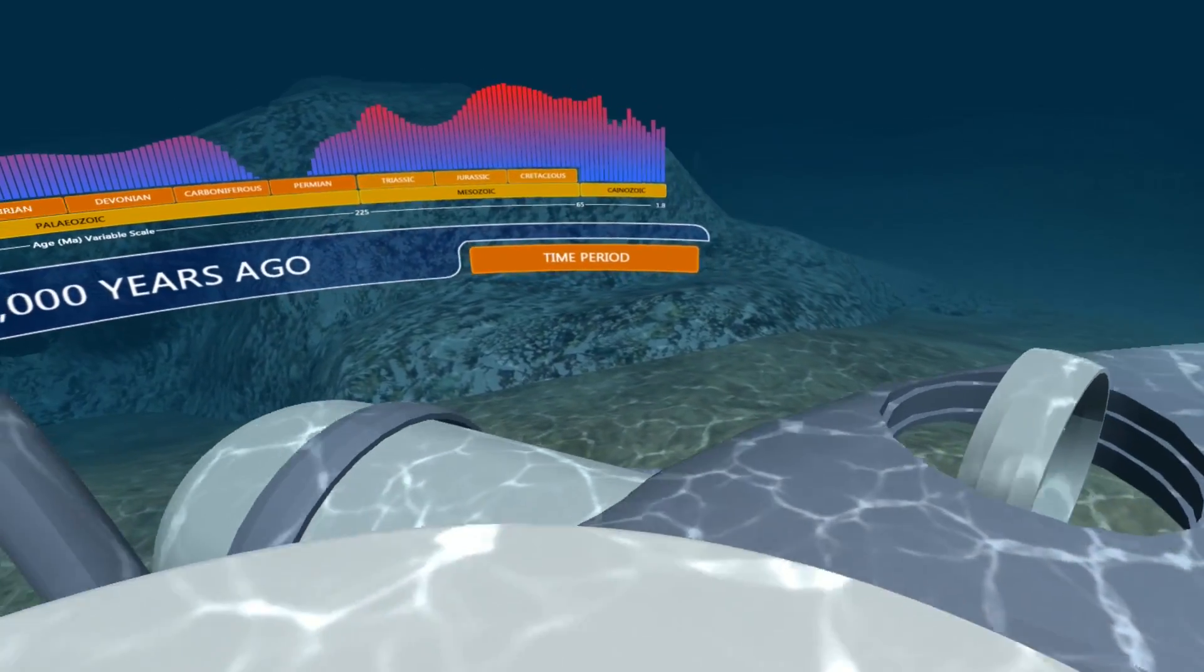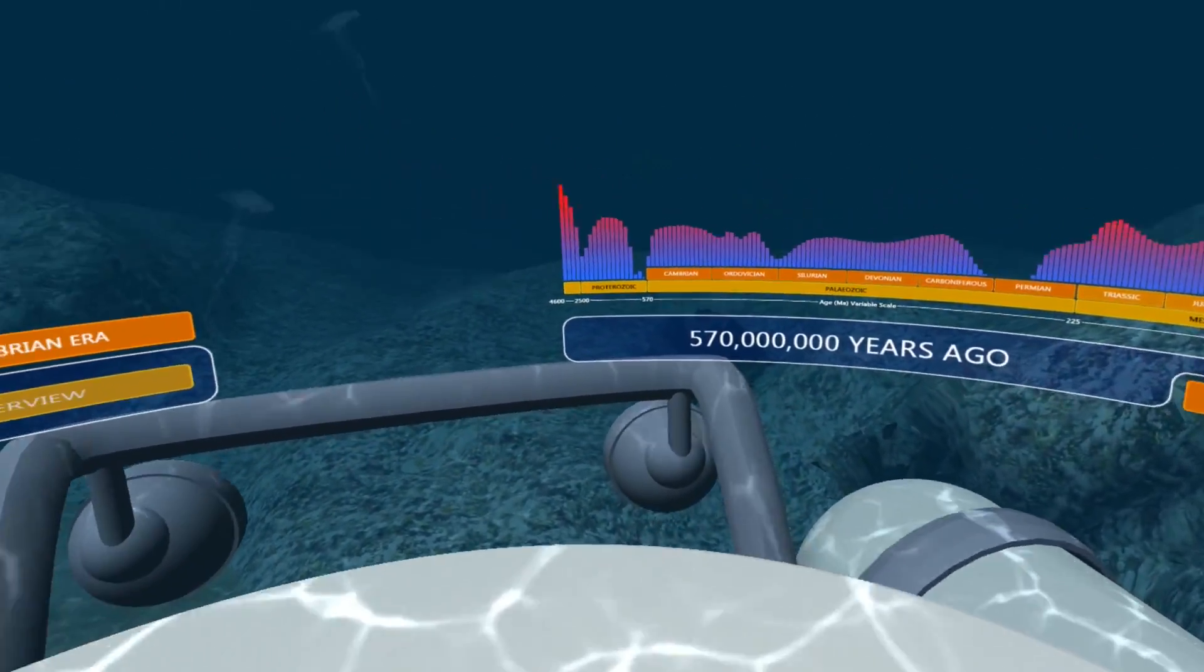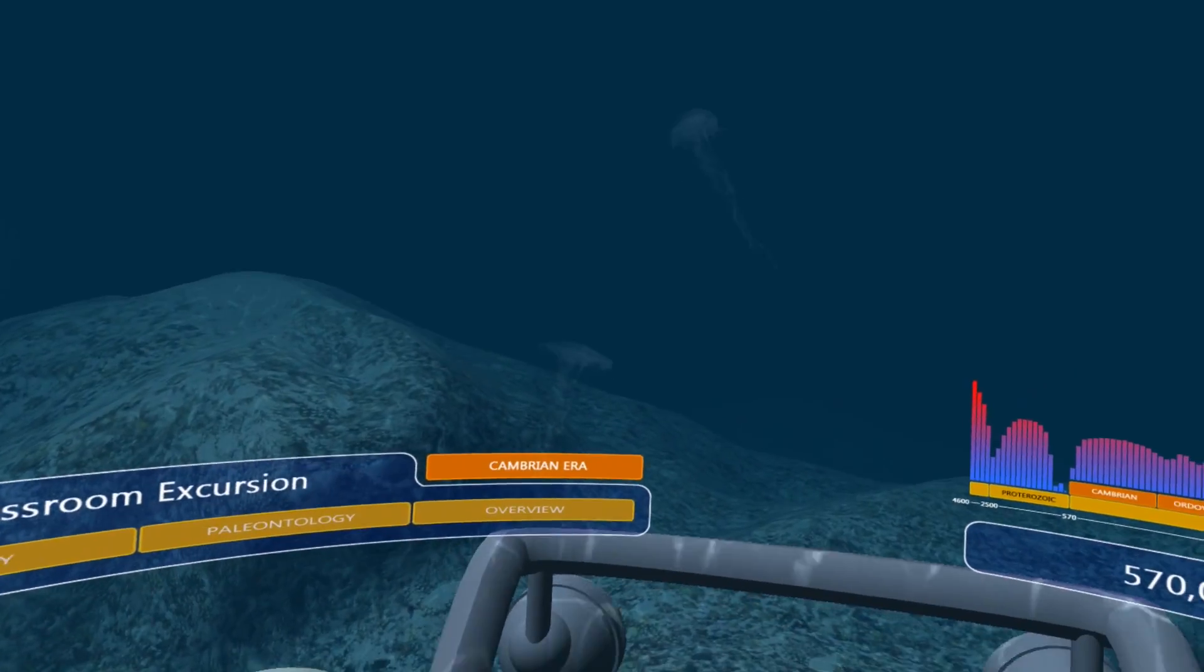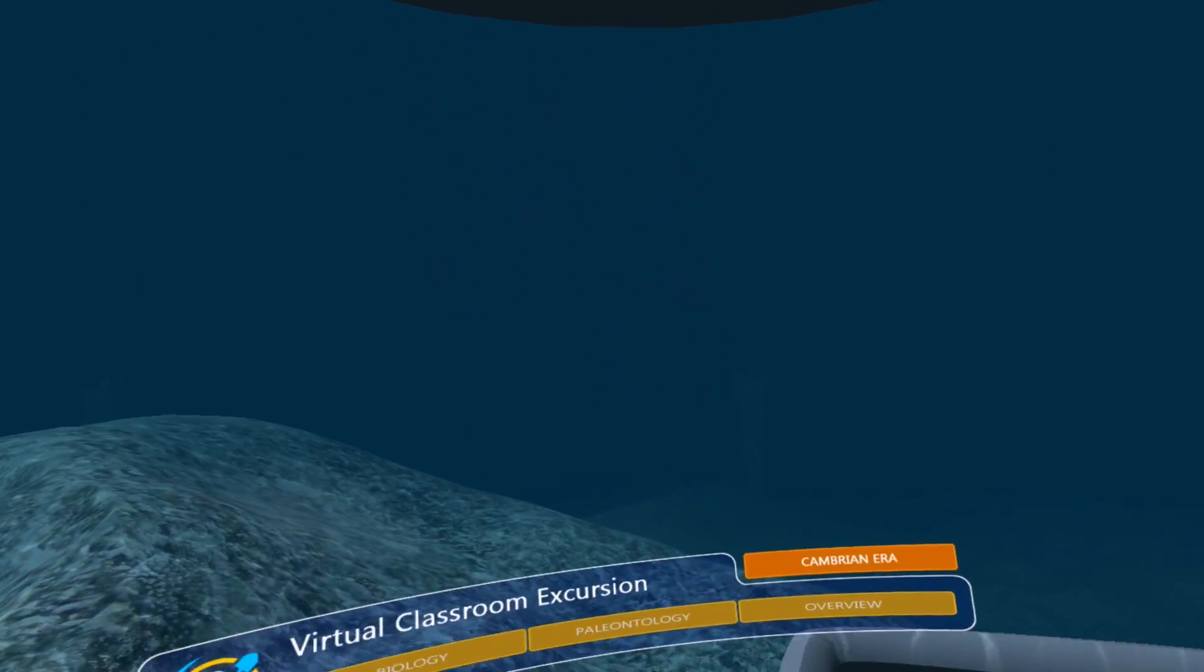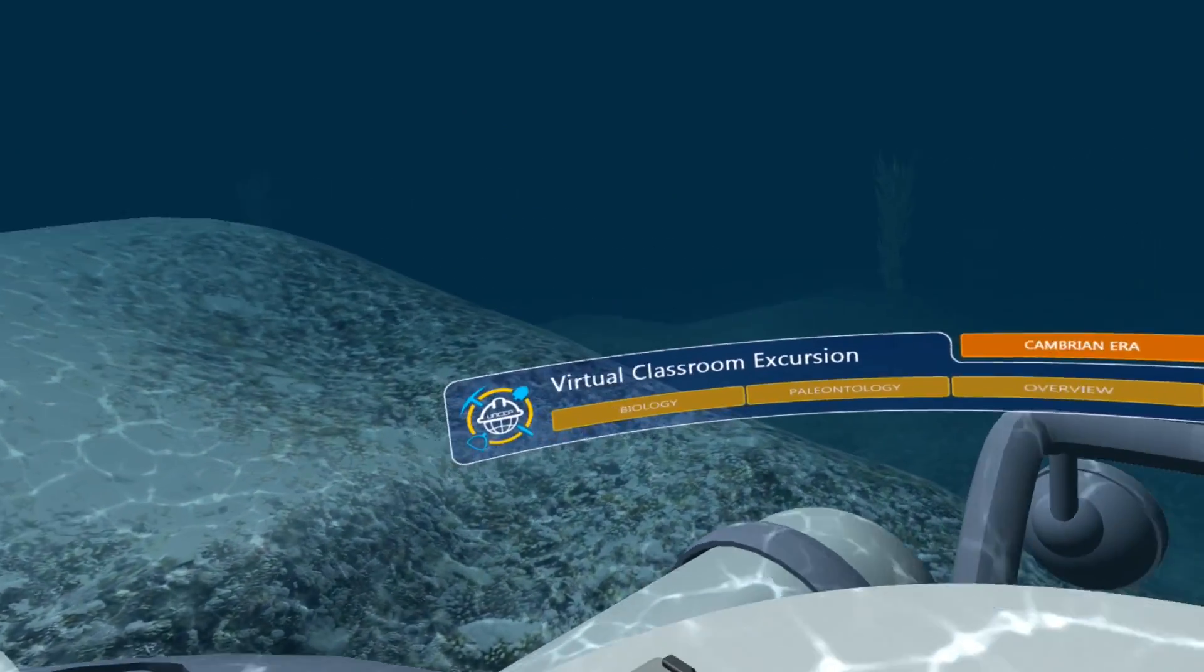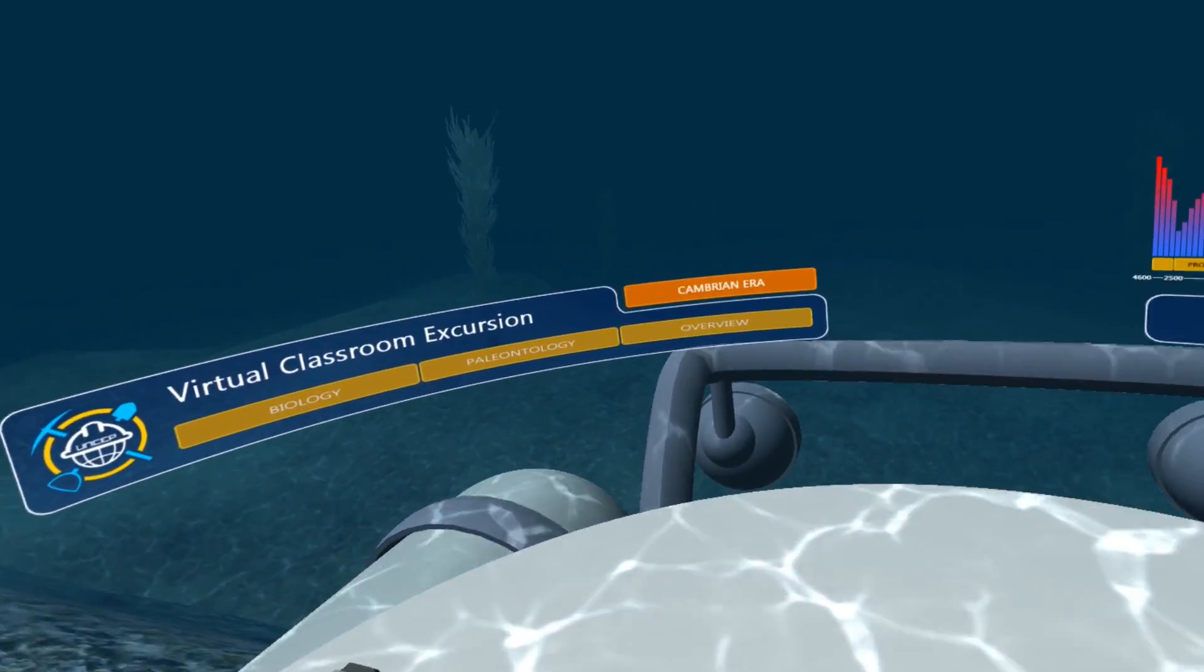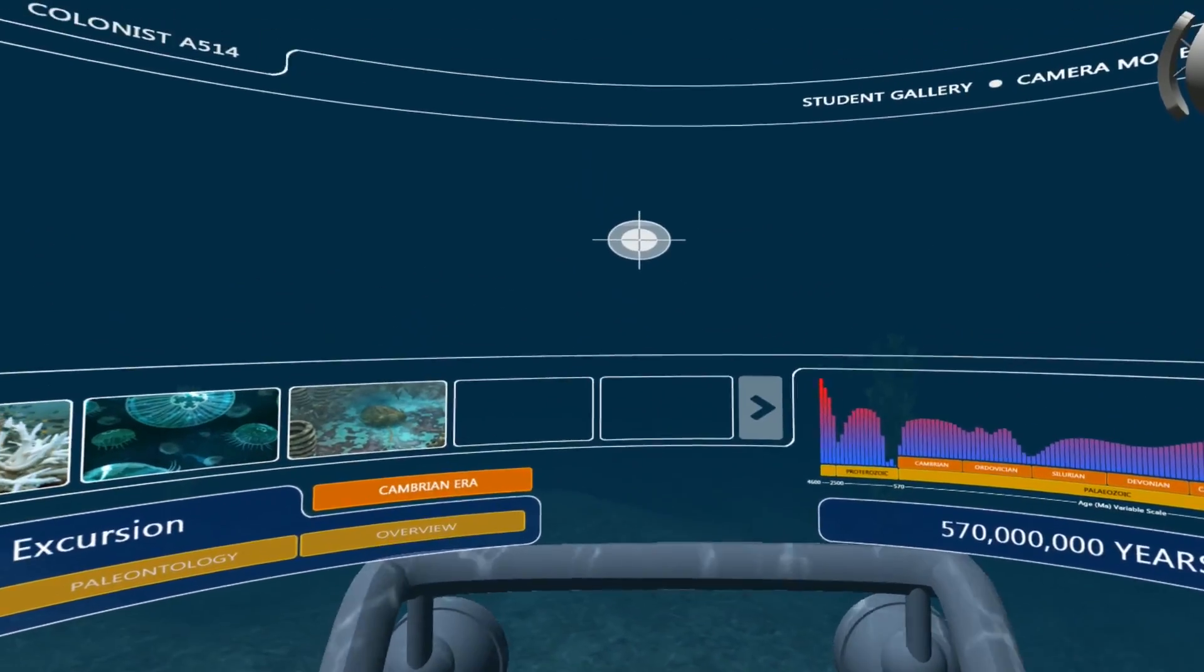The most prolific species found in the Cambrian oceans are trilobites, small segmented arthropods that possess hardened exoskeletons. These will become the genetic predecessor to all lobsters, crabs, and insects. Let's see if we can find some.